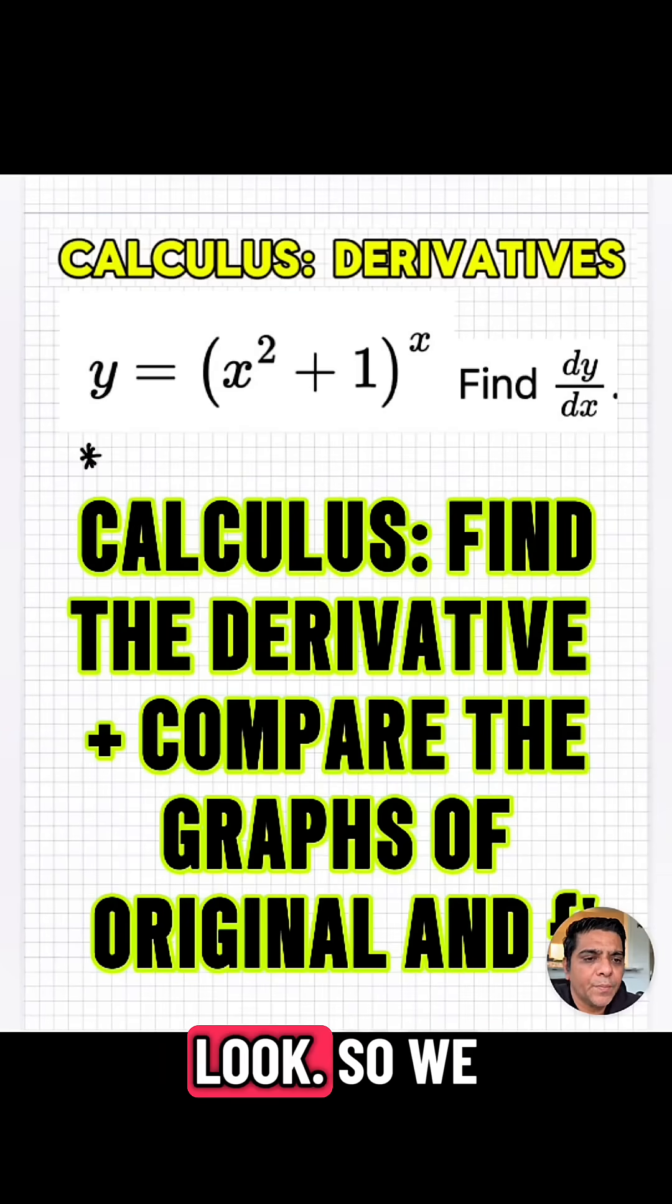Can we find the derivative of this? Let's take a look. So we have y equals x squared plus 1 to the power of x. Find the derivative of that.